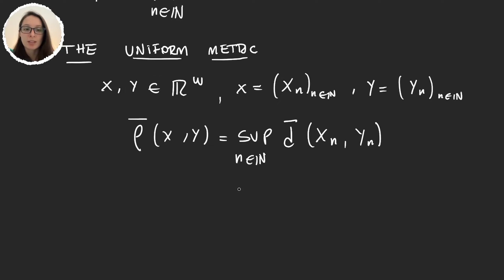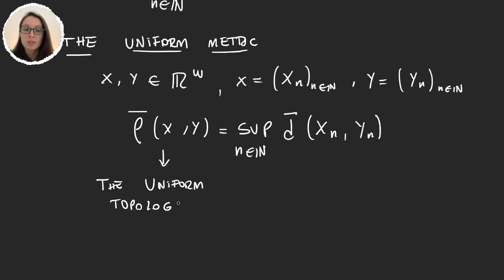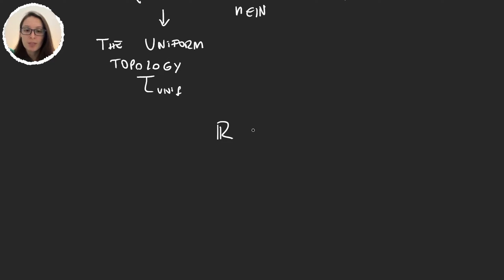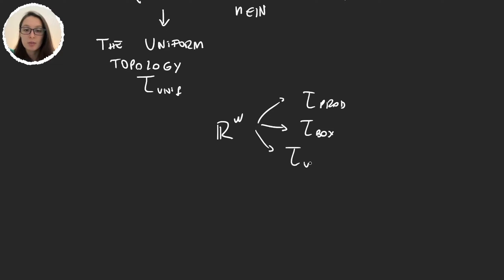Because this is a metric, it induces a topology called the uniform topology. We will call it τ_unif, from uniform. So now in R^ω we have three topologies: the product topology, the box topology, and now the new one — the uniform topology.